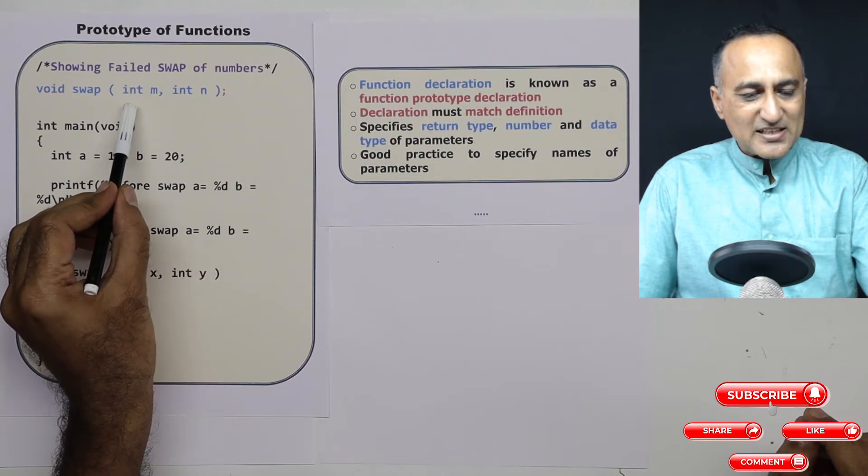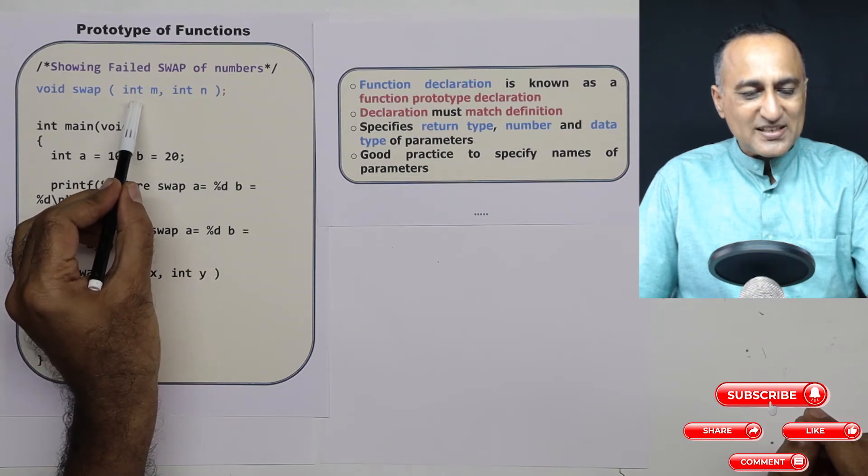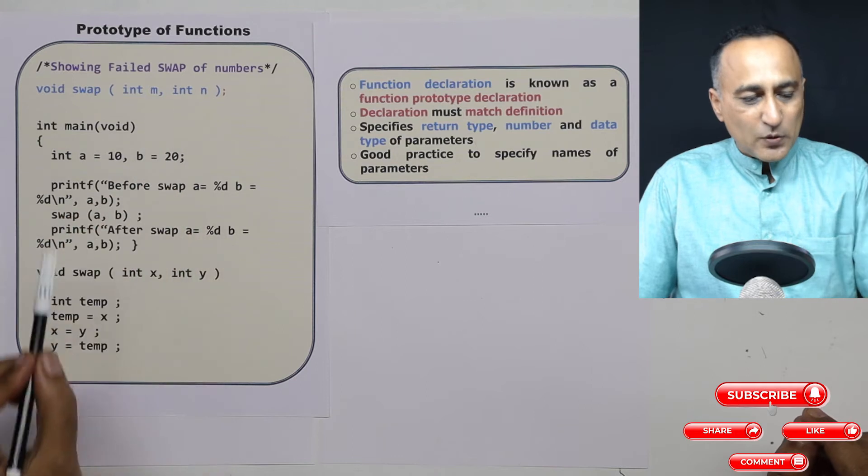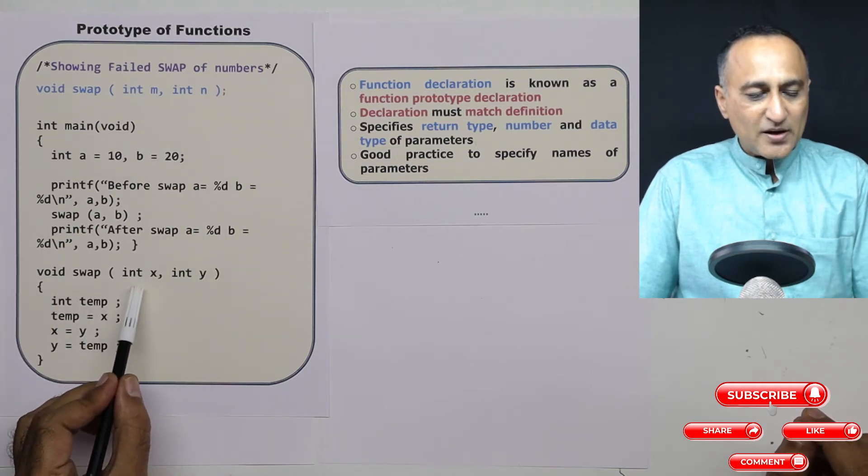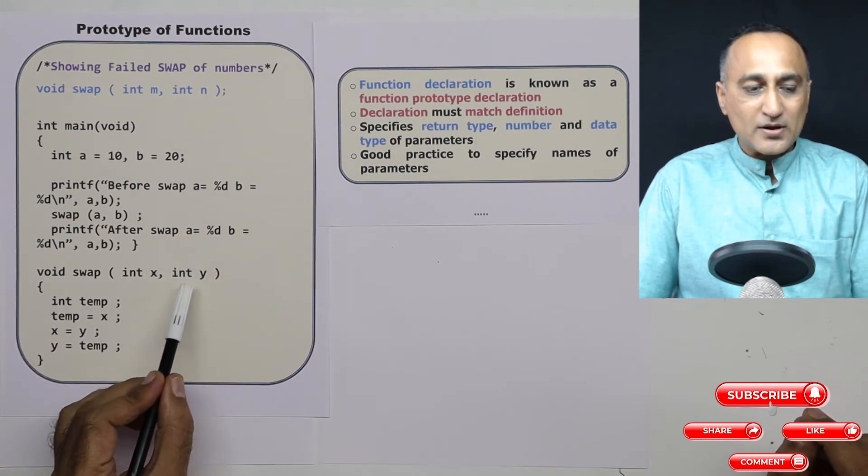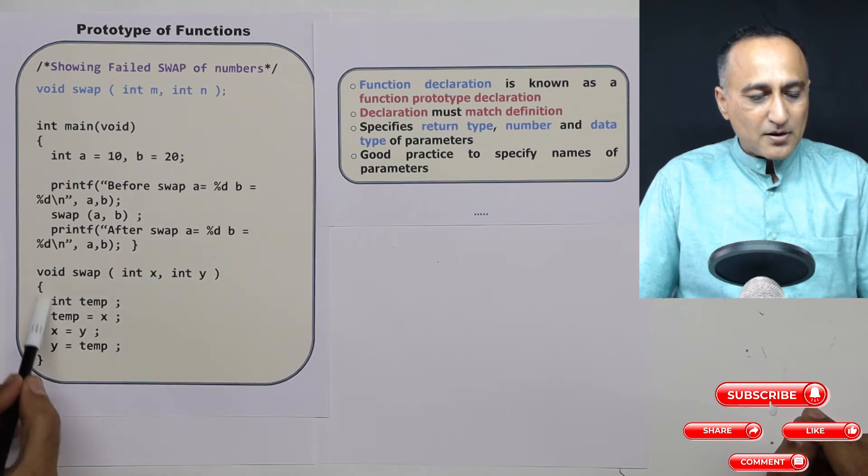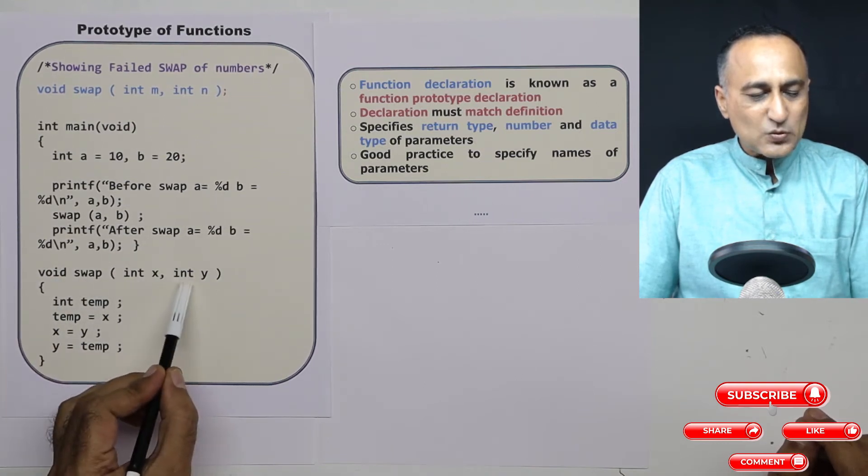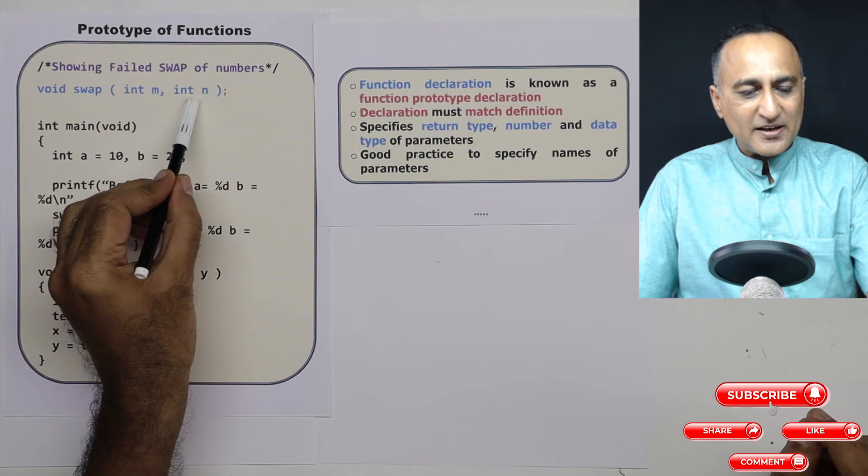If I say it accepts two parameters, one is integer and the second is integer, when I am writing the function, it cannot be one int and one float. This int xy must match the data type here.